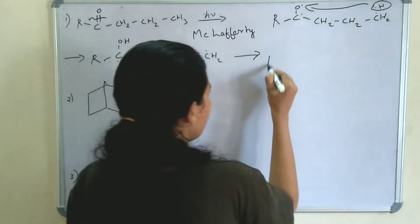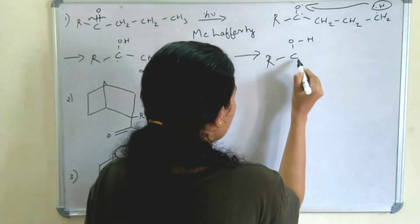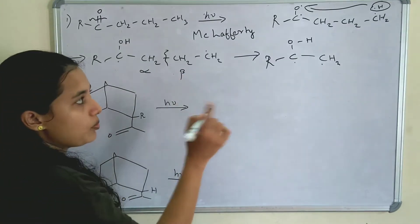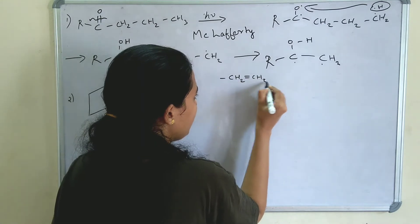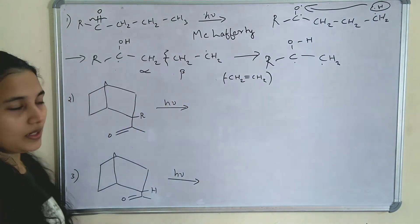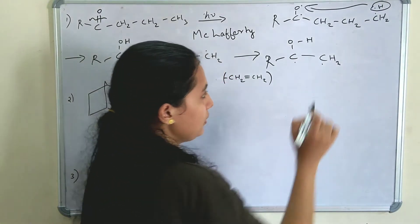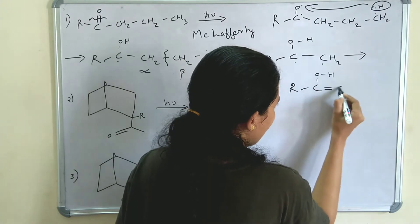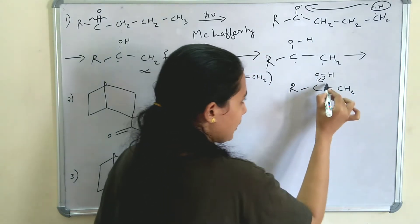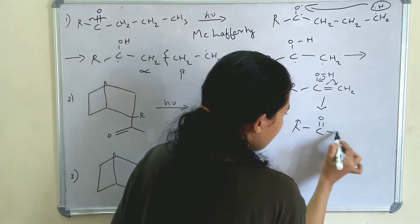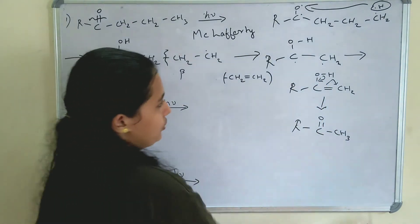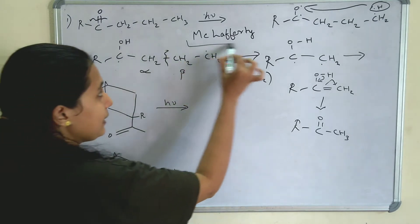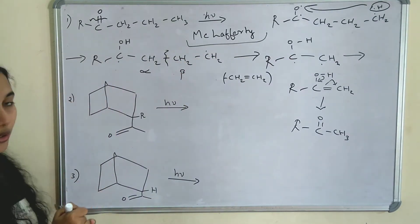Then alpha-beta cleavage occurs — this bond is cleaved. We get R-C-OH with a radical here and a CH2 radical. Then CH2=CH2 is eliminated. The two radicals combine to form a double bond: R-C-OH double bonded to CH2. This can shift to give a ketone: R-C=O double bonded to CH3. So from this compound we are getting the ketone product through McLafferty rearrangement. This is the Norrish type 2 reaction mechanism.